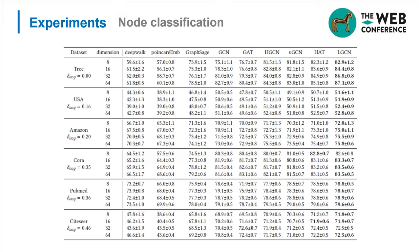The results of node classification tasks are shown in this table. We can also find that LGCN achieves better results than the baselines in most cases.